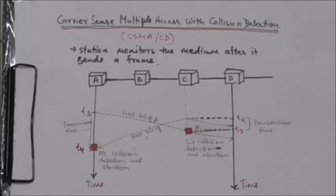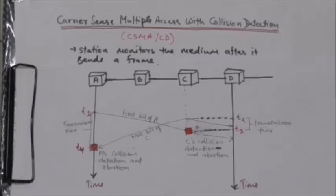In this method, a station monitors the medium after it sends a frame. If the transmission was successful, then the station is finished. If there is a collision, the frame is sent again.